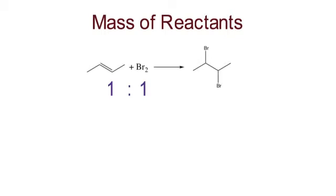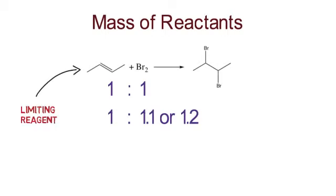But in reality, one of the reactants is usually used in a bit of excess to make sure the reaction goes to completion. For example, the ratio of alkene to bromine could be one to one point one or even one point two. In this case, alkene would be the limiting reagent and once it is consumed, the reaction stops.